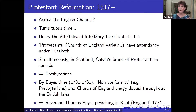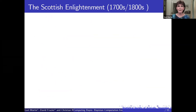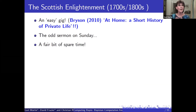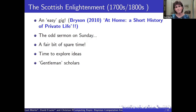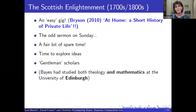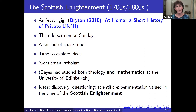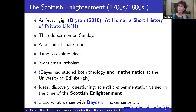So that's half the story of why Thomas Bayes is who he is. Where does the mathematics come in? These clergy were examples of the gentleman scholars of the time, supported by their local community with time to explore ideas. Bayes had studied mathematics at the University of Edinburgh, and during the 1700s in Scotland there was a real flowering of ideas and scientific experimentation — the so-called Scottish Enlightenment — which his education had thrown him right into the middle of.